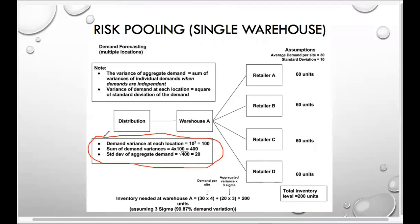You take the demand variance at each location. The demand variance at each location is 10. And you square it. Once you square it, you add all the demand variation up. So now we go 4 times 100, which is 400. Then we take the square root of 400, and that gives us 20.